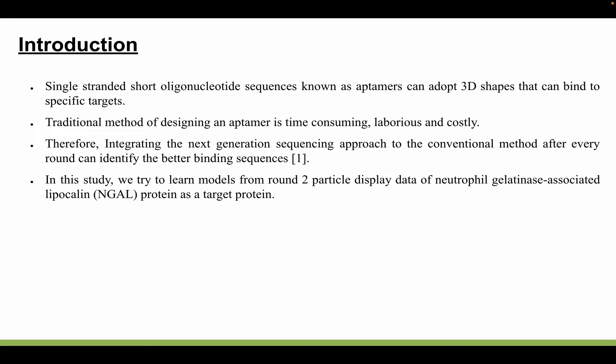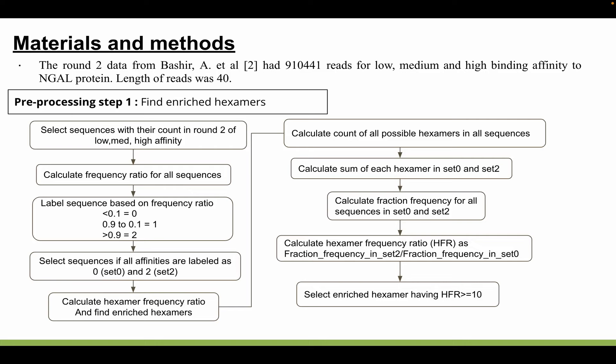Integrating the next-generation sequencing approach into the conventional method can generate sequencing data after every round. In our study, we tried to learn a model from round two particle display data of NGAL protein as a target protein. This protein is expressed in human tissues such as kidney, heart, lung, and liver.